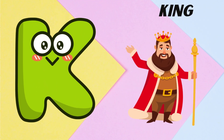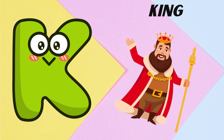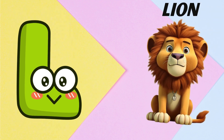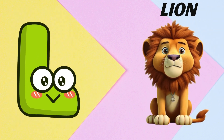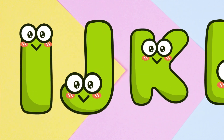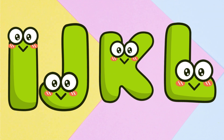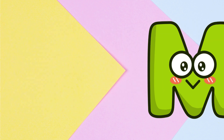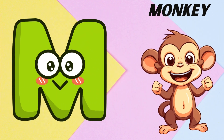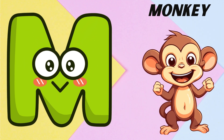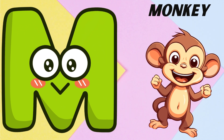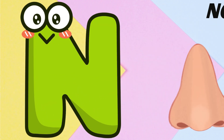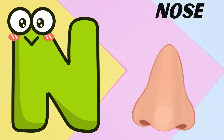K is for king, k-k-king. L is for lion, l-l-lion. M is for monkey, ma-ma-monkey. N is for nose, n-n-nose.